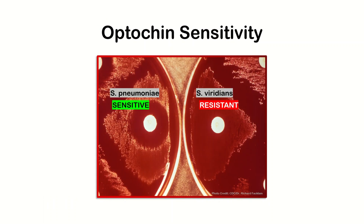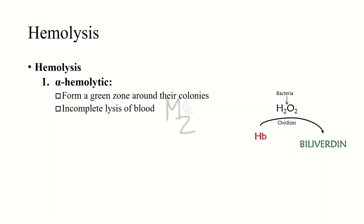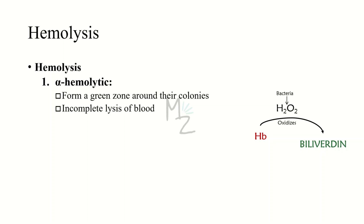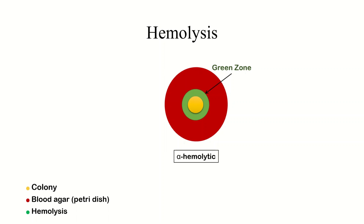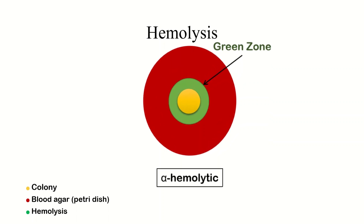Streptococcus pneumoniae is optochin sensitive, meaning it will be killed in the presence of an optochin disc, as you can visualize. Streptococcus viridans is optochin resistant, so it will not be killed — no zone of killing is seen. Hemolysis is the breakdown of red blood cells, observed on blood culture. Alpha-hemolytic bacteria cause partial or incomplete lysis of blood and form a green zone around their colonies. The bacteria release hydrogen peroxide, which oxidizes red hemoglobin to green biliverdin. As you can see, the yellow area is the colony, the green zone surrounds it, and the red is the blood agar.